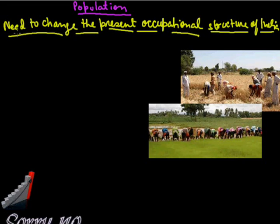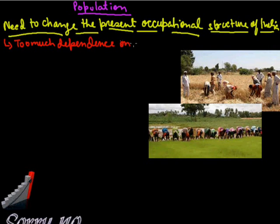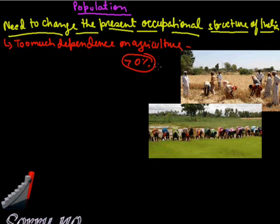We need to change the present occupation structure of India, which is one of the major problems in front of us. There is too much dependence of population on agriculture, as you can see here in India. Approximately 70% of the population is dependent on agriculture for their occupation. As we know, rural population comprises approximately 70% and they all depend on agriculture for occupation.